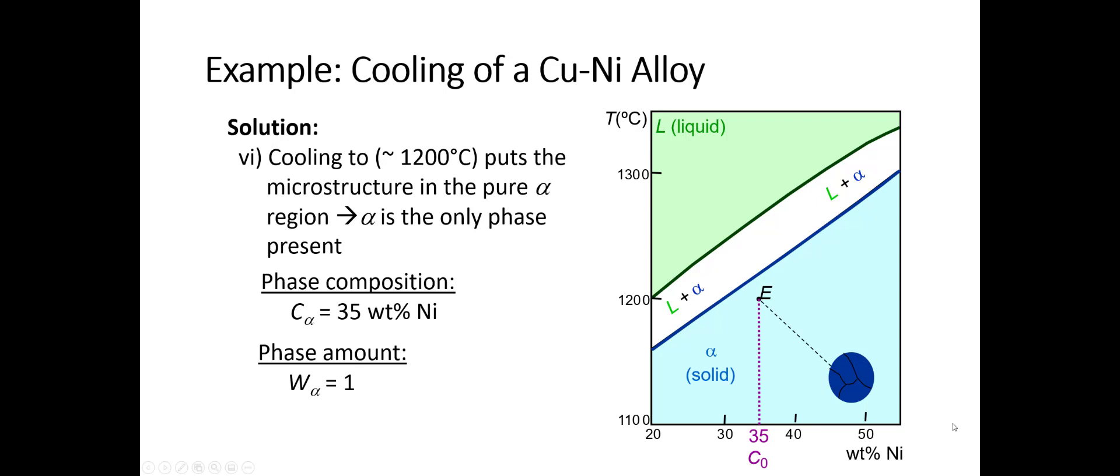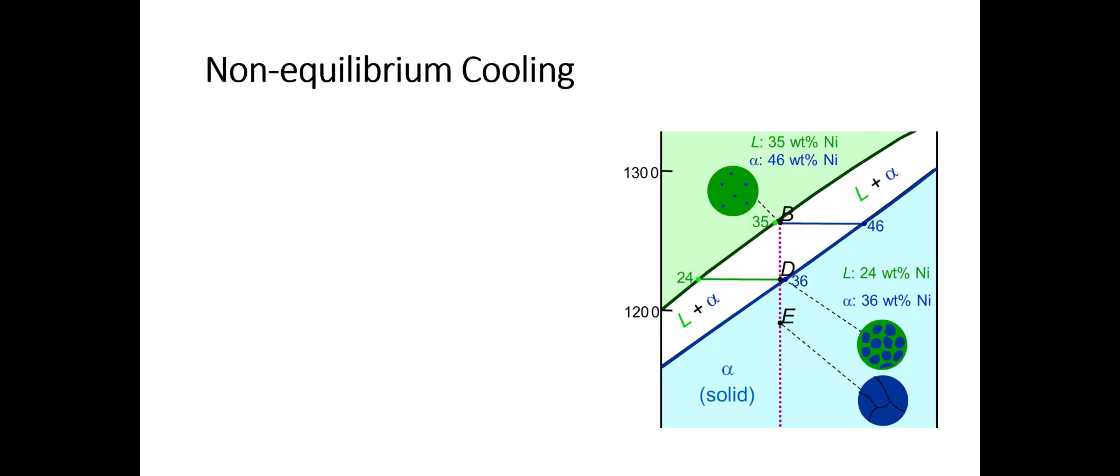So far, everything that we've talked about has been slow cooling, allowing the equilibrium microstructure to develop. But I want to remind you about what we talked about briefly, namely that when the solid phase begins to form, it has a phase composition of 46 weight percent nickel. And the last time it forms, it has a 35 weight percent nickel phase composition. So there's a fairly large drop from 46 weight percent down to 35 weight percent. How are we going to achieve that?